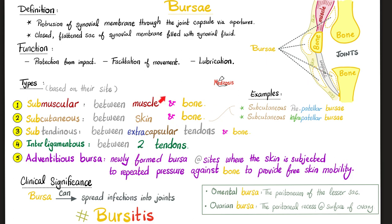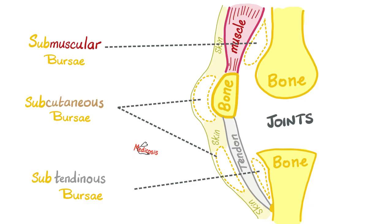Are these the only bursae that we have in the body? No. Do not forget your omental bursa, which is the peritoneum of the lesser sac in your abdomen, and the ovarian bursa, which is the peritoneal recess when it comes in close proximity to the medial surface of the ovary.